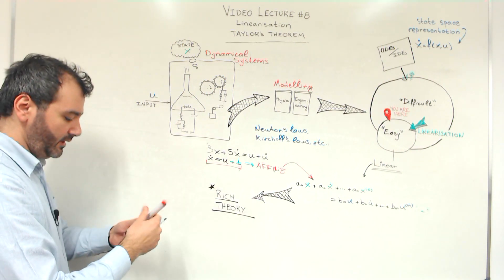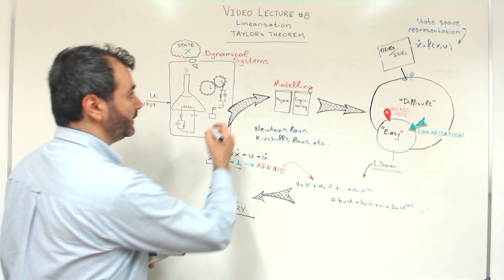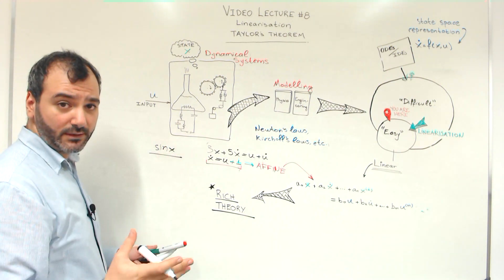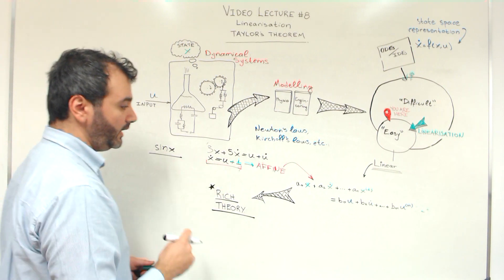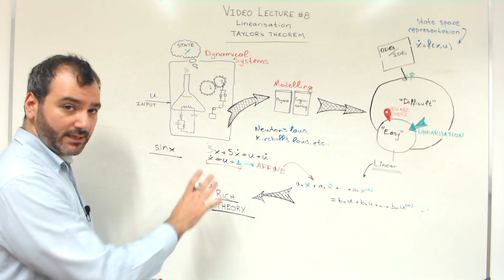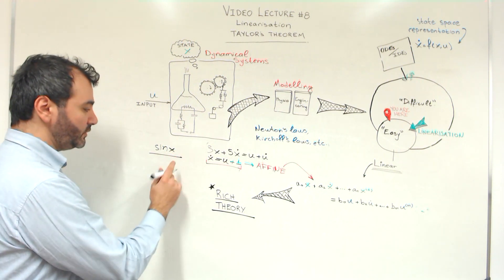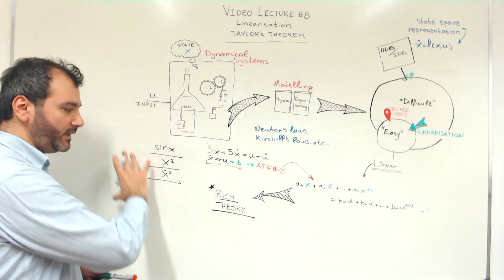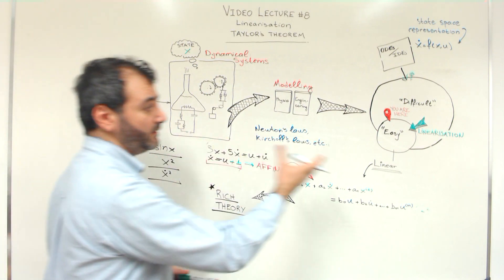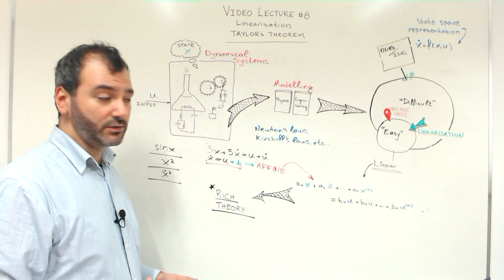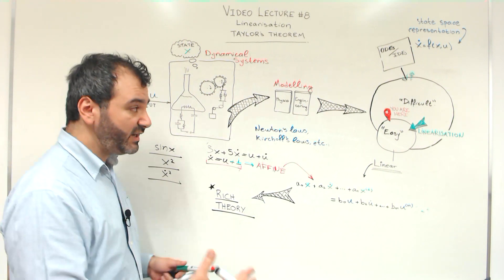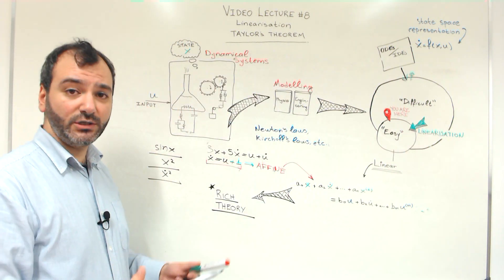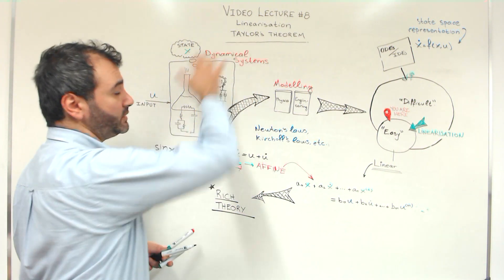All other equations that involve terms of the type sine of x — we have encountered such equations, for example in the inverted pendulum equations, where we had sines and cosines — or x squared, or x-dot squared, and so on: any equations involving such terms are the difficult ones, the non-linear equations. Thankfully, there is a result that allows us to approximate such difficult non-linear equations by linear ones.